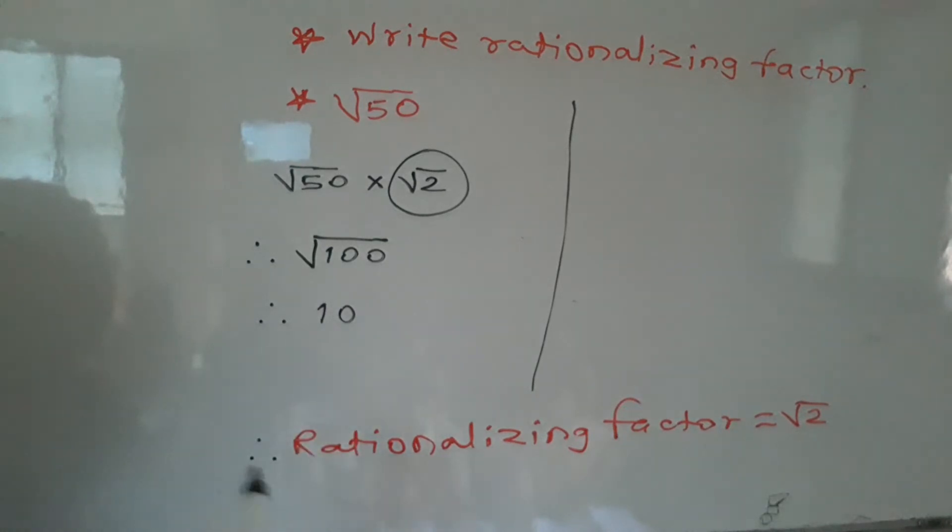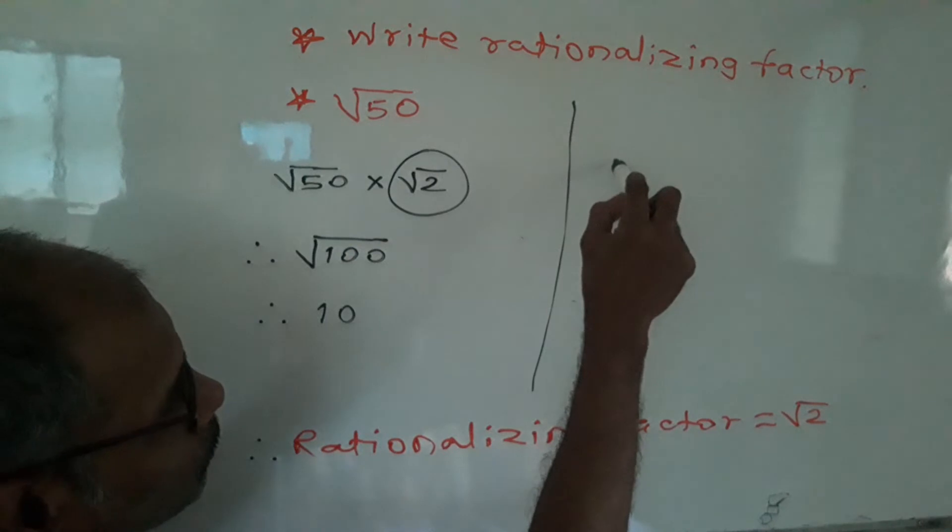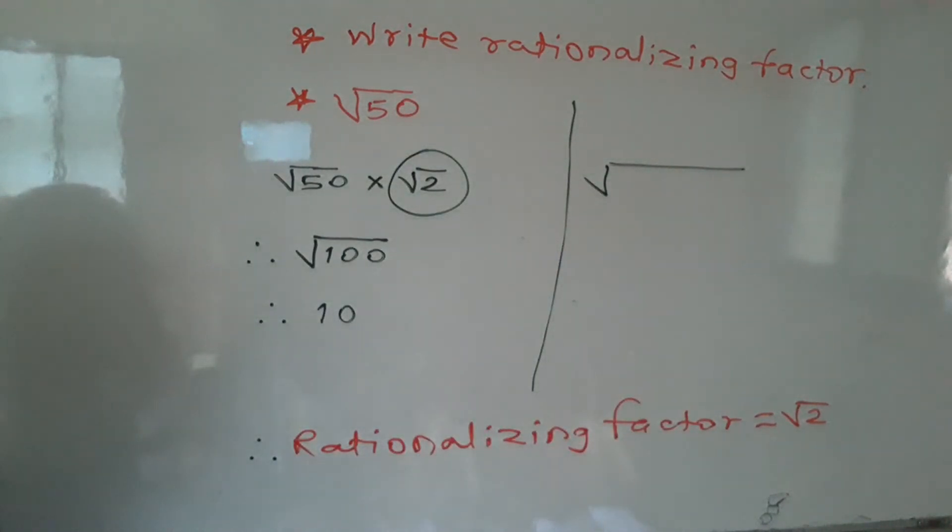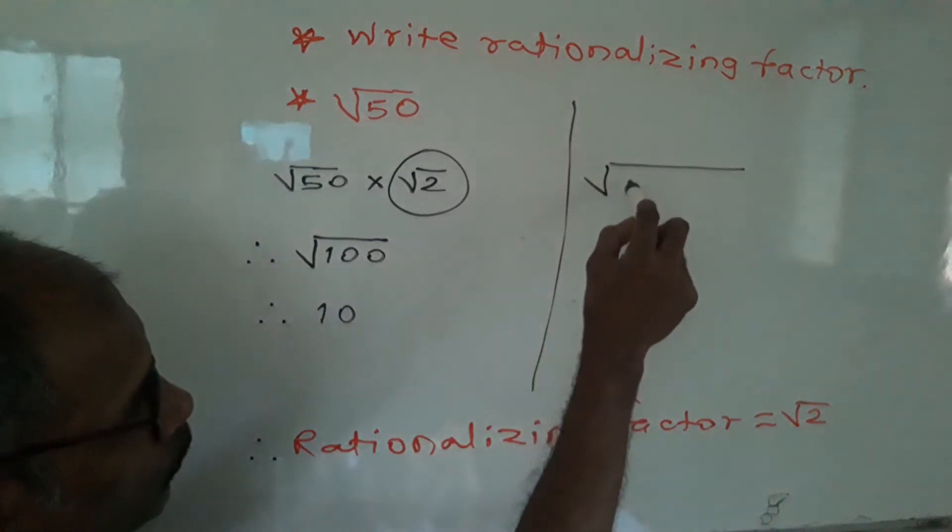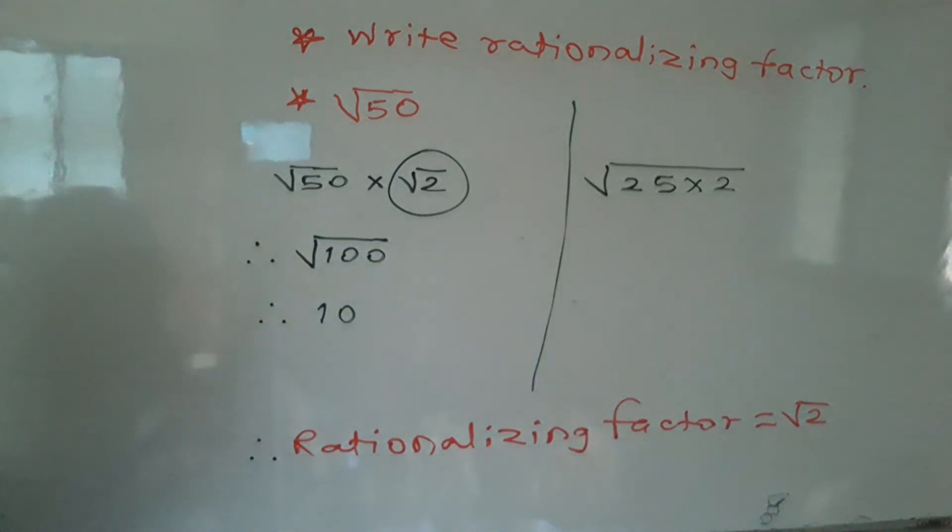That is our answer. We also solve this by using this method. That is, this 50 we split or reduce into perfect square and another number, prime number or any other number.